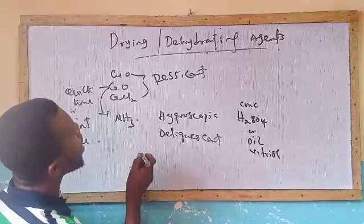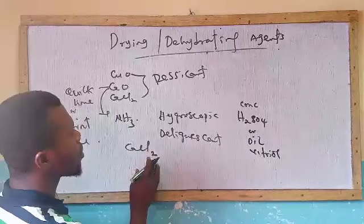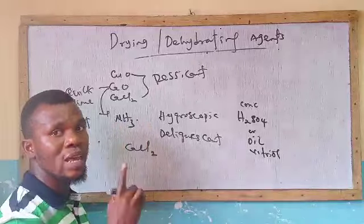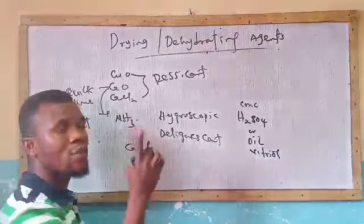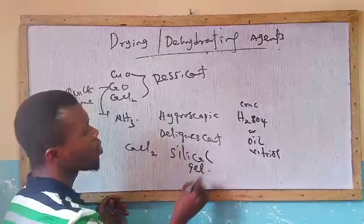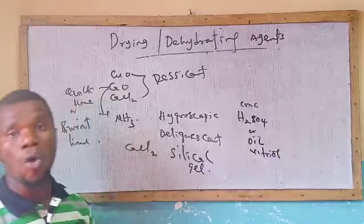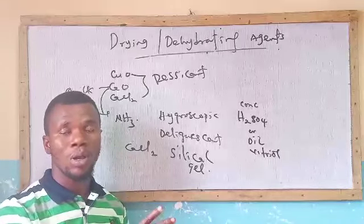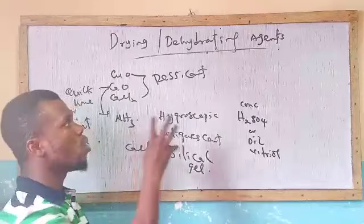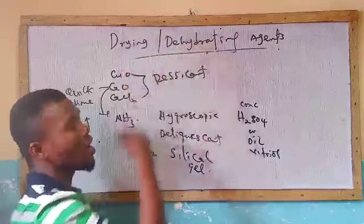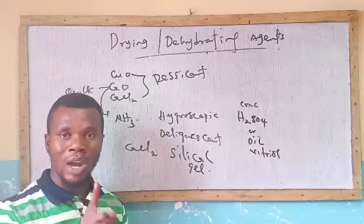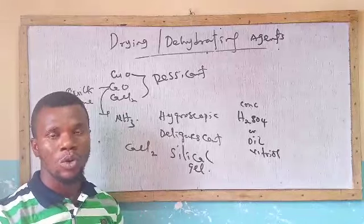Calcium chloride can dry all gases but cannot be used to dry ammonia. The major drying agent that can be used to dry all gases is silica gel. Silica gel has the ability to dry all substances and remove moisture from all gases without affecting any of their properties. These are what we should know about drying and dehydrating agents. Don't forget to subscribe, like, and share this video — thank you very much for watching.